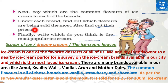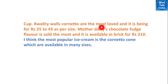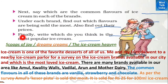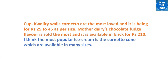Then write which flavor sells the most under each brand. For example: Amul's Kesar Pista ice cream is sold the most at Rs. 25 for a 100ml cup. Quality Walls' Cornetto is loved most, sold in the price range of Rs. 25 to 45. Mother Dairy's chocolate fudge flavor sells the most, available in bricks of Rs. 100 to 200. Finally, write which you think is the most popular: 'I think the most popular ice cream is the Cornetto cone, which is available in many sizes and loved by people across all ages.'